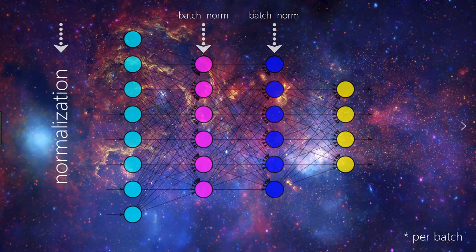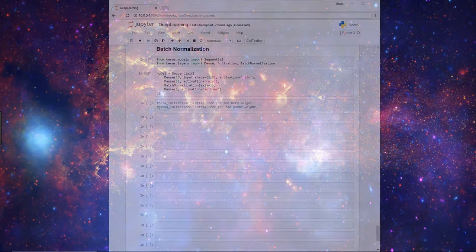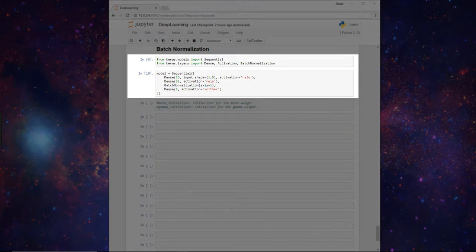So now that we have an understanding of batch norm, let's look at how we can add batch norm to a model in code using Keras. So I'm here in my Jupyter notebook, and I've just copied the code for a model that we've built in a previous video. So we have a model with two hidden layers with 16 and 32 nodes respectively, both using ReLU as their activation functions, and then an output layer with two output categories using the softmax activation function.